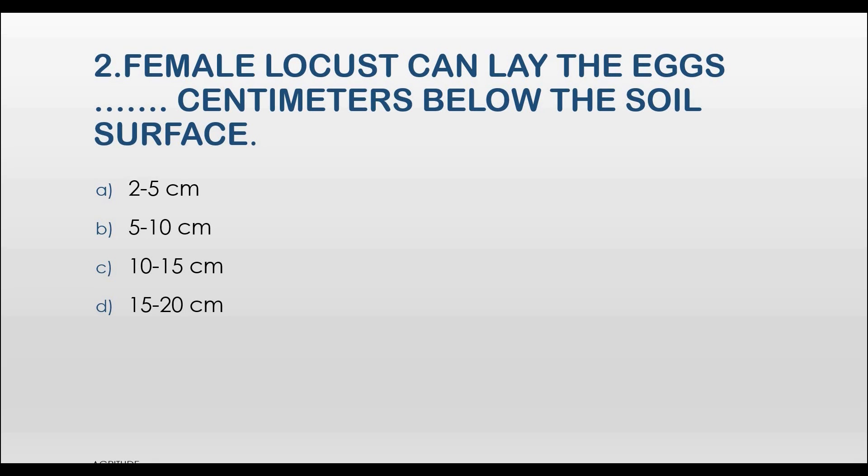Here is the second question on your full HD screens. Female locusts can lay the eggs blank cm below the soil surface. And the options are A. 2-5 cm, B. 5-10 cm, C. 10-15 cm, D. 15-20 cm.